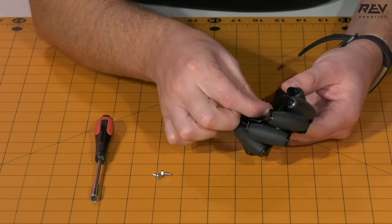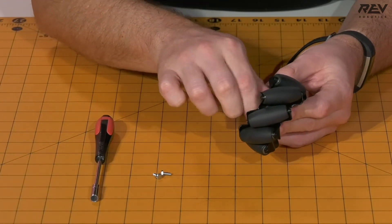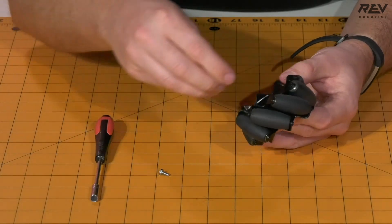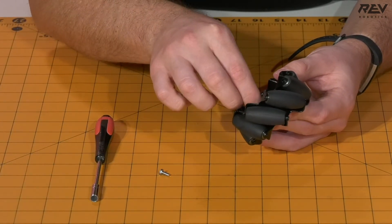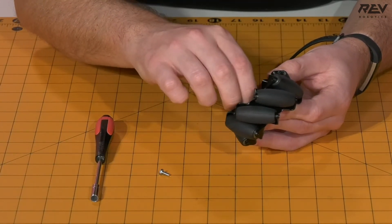You can get these started with a few of the holes that are on the universal hex hub itself.